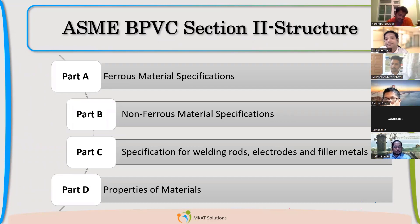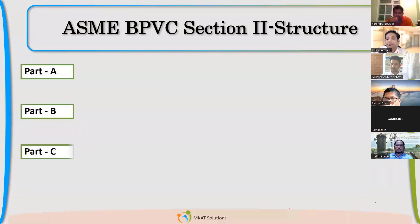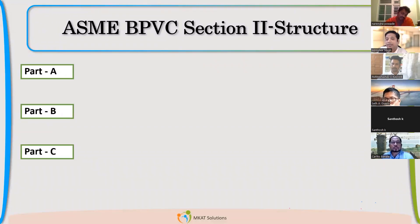As a static equipment design engineer, you might be referring to Part D a lot. Moving forward, we saw that there are four different parts: ASME Section 2 Part A, Part B, Part C, and Part D.